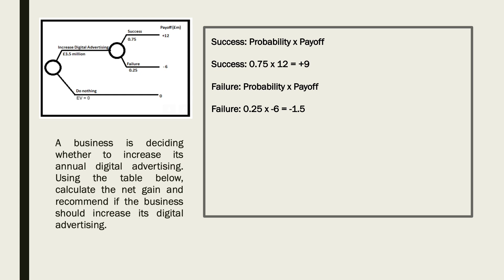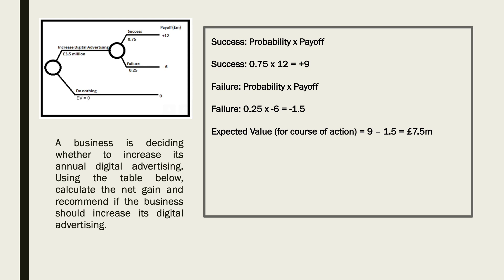Based on that we can calculate our expected value for the course of action, or EV. Our EV is going to be +9 minus 1.5, which comes to +£7.5 million. Now that we've calculated our expected value, that can help us calculate our net gain for that course of action.